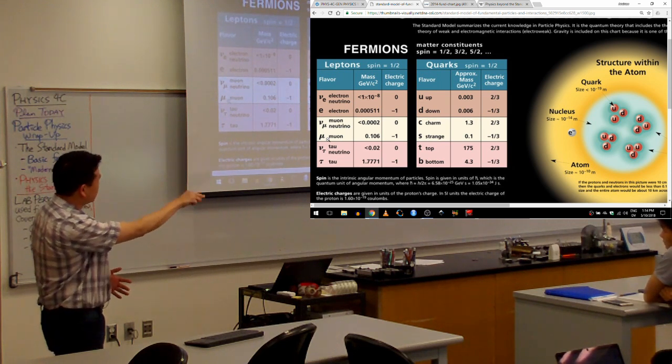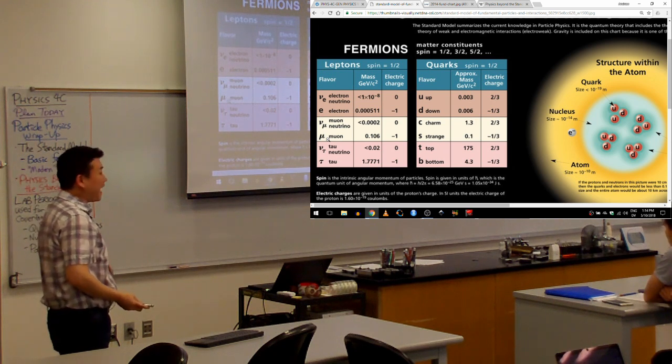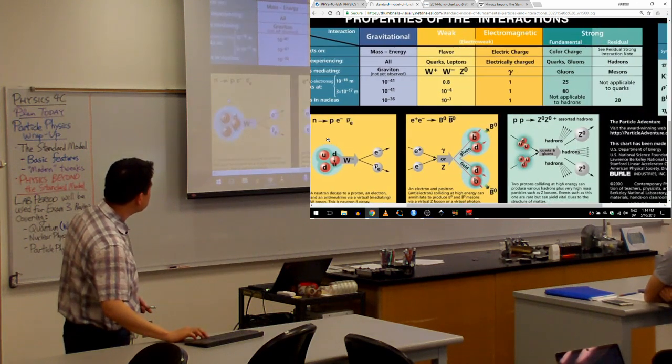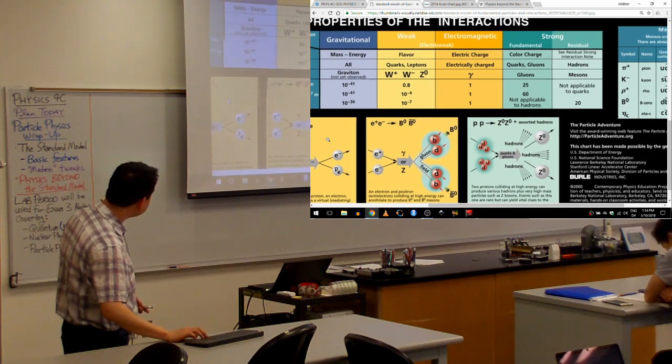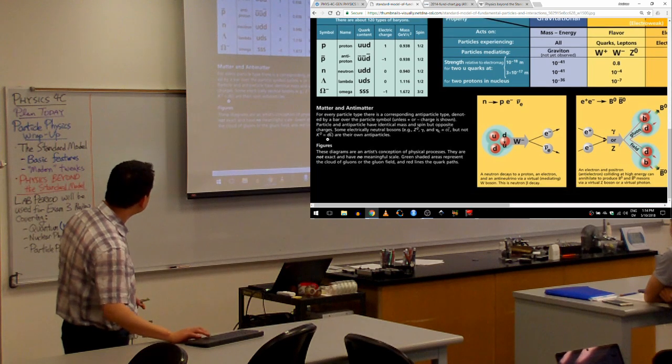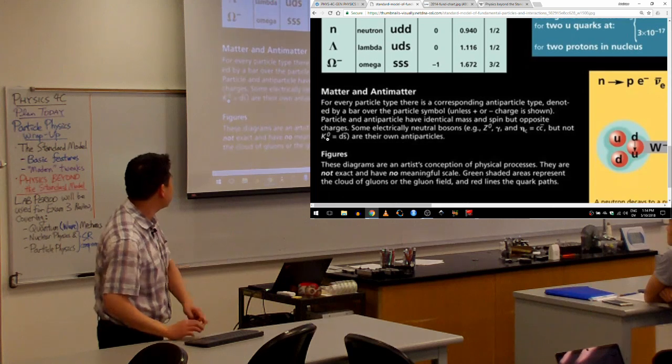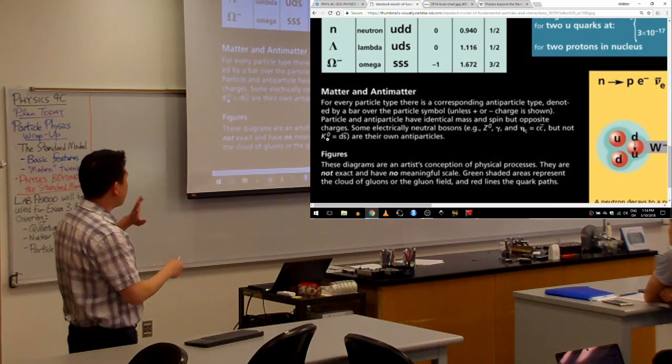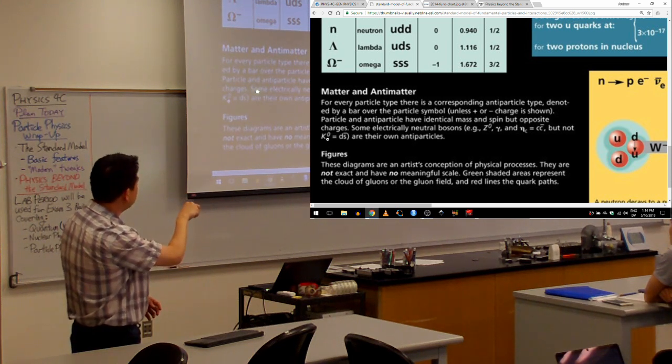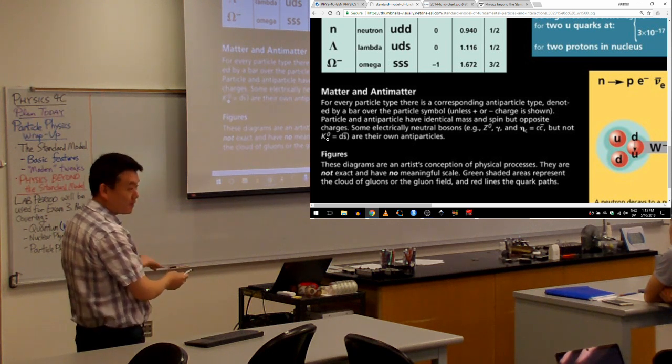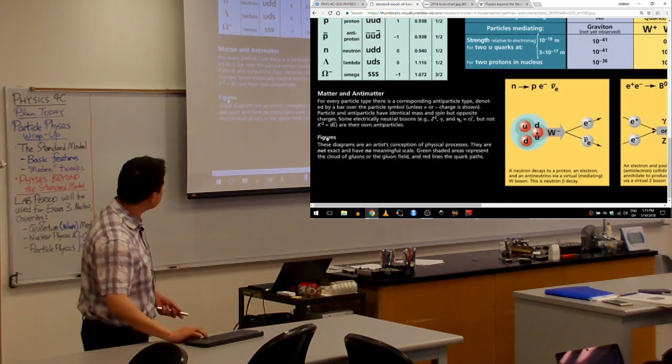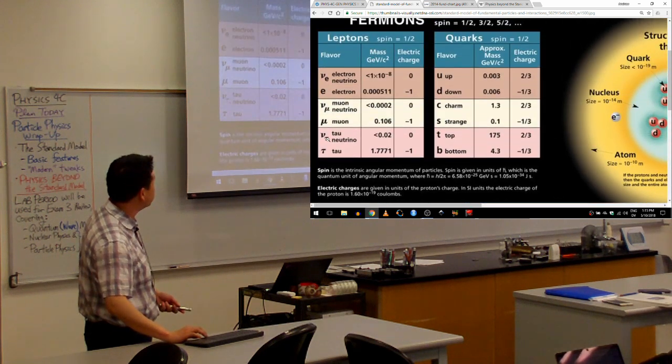So these are the 12 elementary fermions, not counting their antiparticles. So we talked about the concept of antiparticles. They are covered, wait, I thought it was covered in this poster somewhere. Where's the antiparticle? Oh, matter and antimatter. So for every particle type, there's a corresponding antiparticle type, denoting a bar. Particle and antiparticle have identical mass and spin, but opposite charges. Some electrically neutral bosons are their own antiparticles. That's a good short summary of what antiparticles are. So in most of these charts, antiparticles are not explicitly listed.